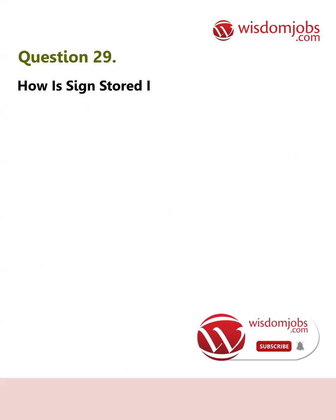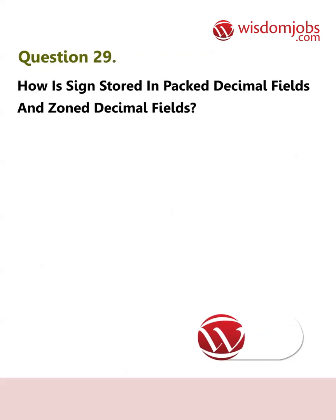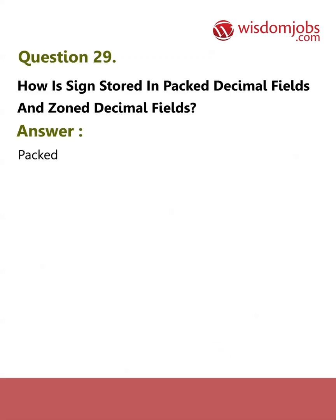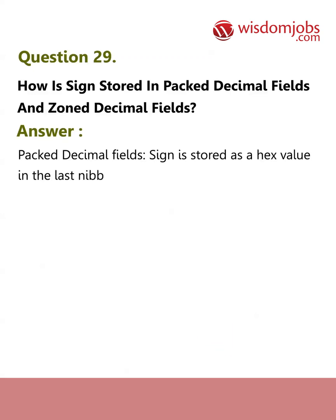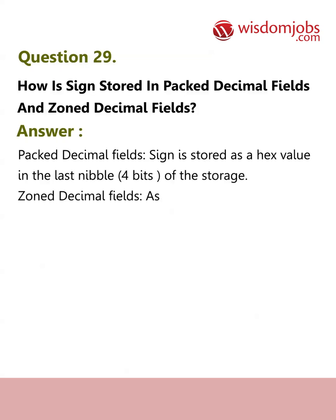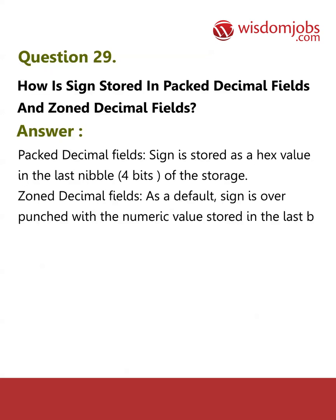Question 29: How is sign stored in packed decimal fields and zoned decimal fields? Answer: In packed decimal fields, the sign is stored as a hex value in the last nibble (4 bits) of the storage. In zoned decimal fields, as a default, the sign is overpunched with the numeric value stored in the last byte.